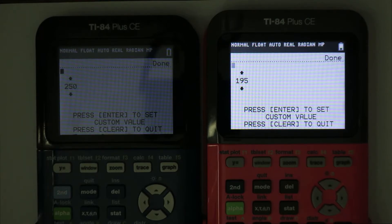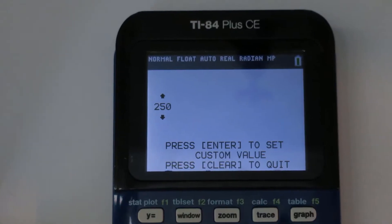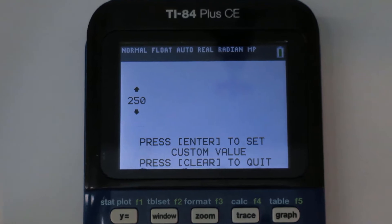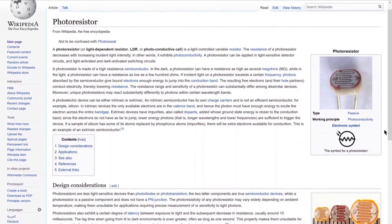You may be wondering why the blinking number isn't directly in the middle of the screen. I decided to move it over to allow for a large space for people to attach photoresistors to the screen.